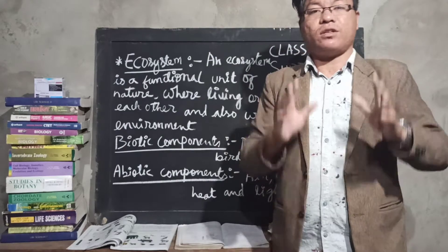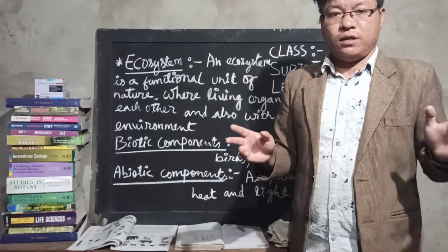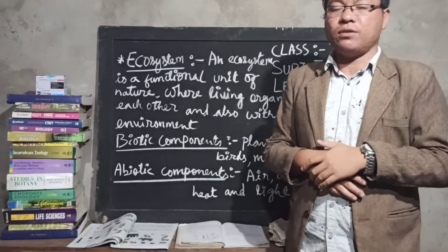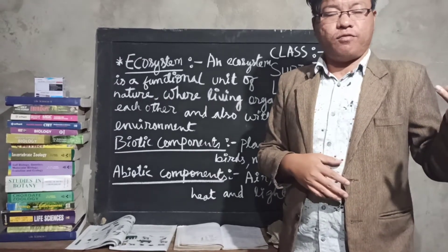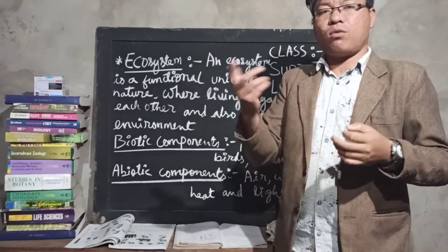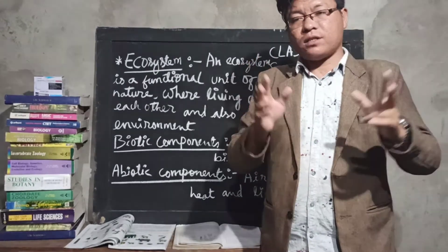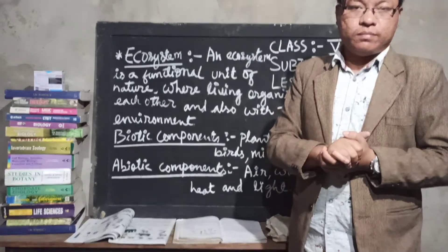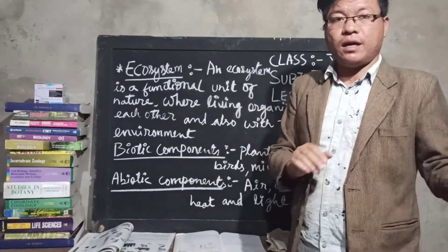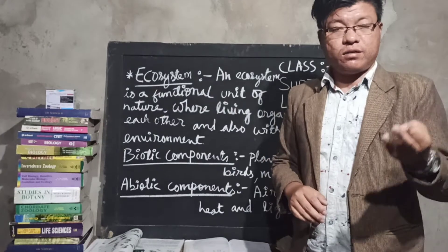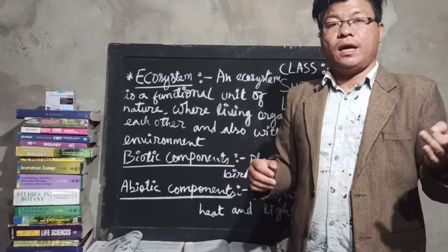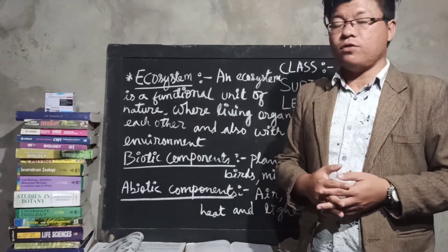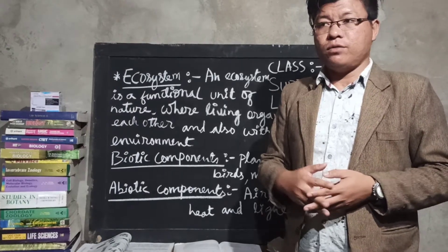Here I will describe to you about the structure of the ecosystem. We have the terrestrial ecosystem and aquatic ecosystem. Terrestrial ecosystem is divided into four types: forest ecosystem, grassland ecosystem, desert ecosystem, and man-made ecosystem — also called monoculture. On the other side, if you look at the marine ecosystem, you will get more types.